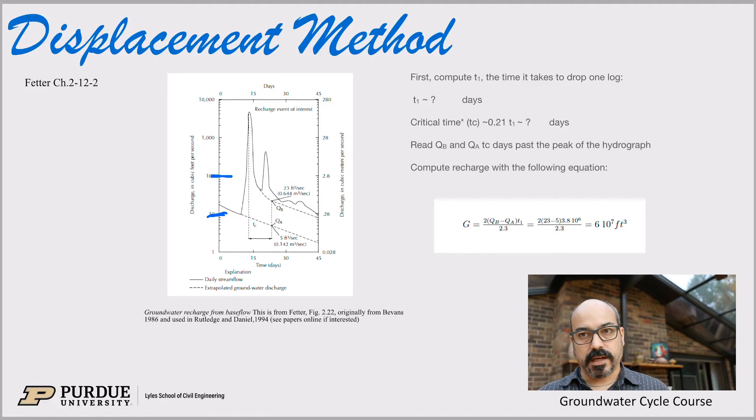And in this case, of course, this plot is made so that the one log is basically dropped in 45 days. So you can look at how long it takes, so for example, here to go from here to here. That's a log, about a log. So it's 45 days. That's your T1, what we call T1.